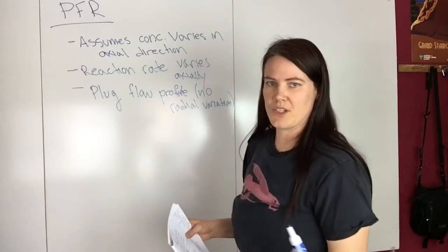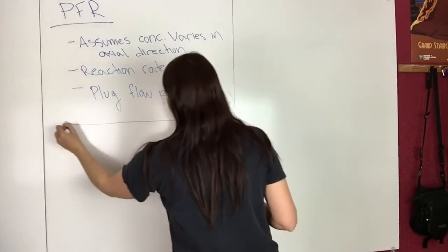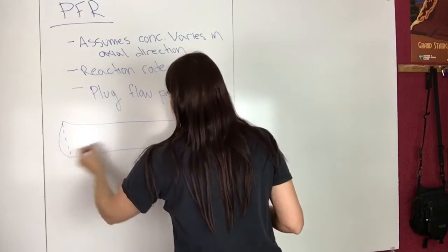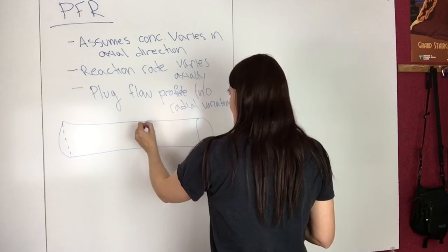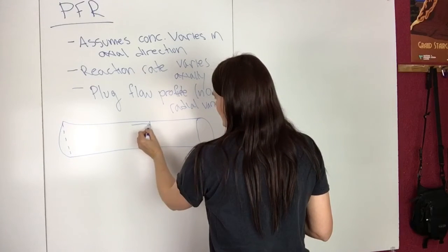What does the plug flow profile mean? I'll just draw a picture of what that looks like. Assume this is your reactor, and you have flow that looks like this.